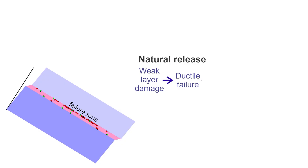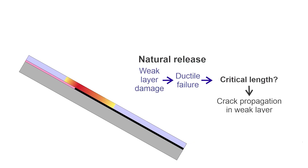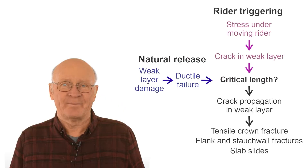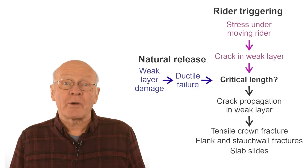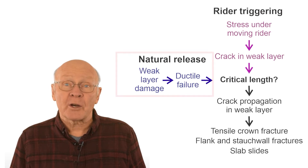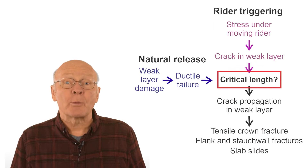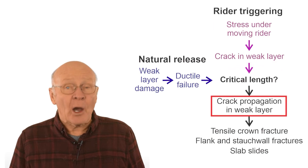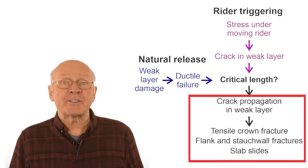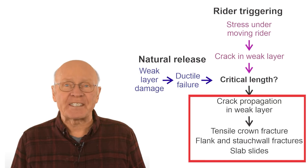However, if the failure zone reaches a critical length, called the critical crack length, the crack will accelerate and propagate, which is the same as for rider triggering. Regardless of whether the crack was caused by a ductile failure or the brittle crack under a rider, if the crack is long enough, it will propagate freely away from the trigger point. The latter stages of crack propagation and slab release are the same.